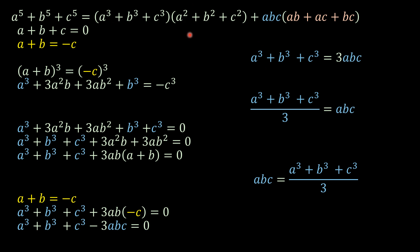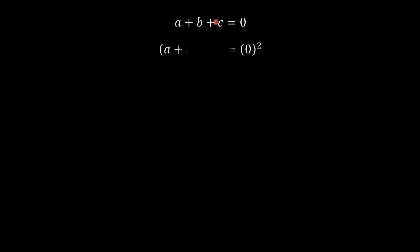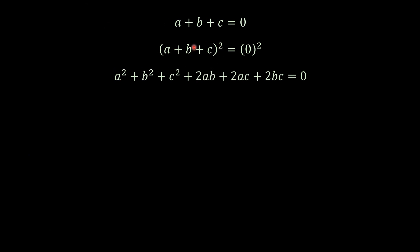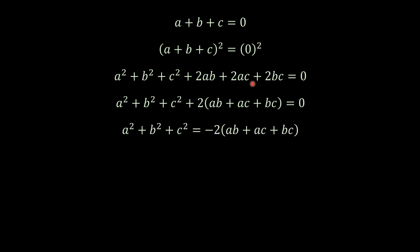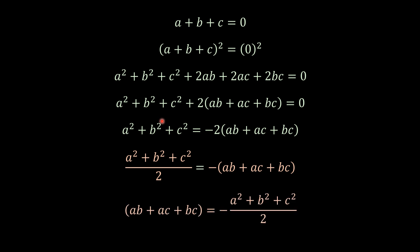Now let's take a plus b plus c equals 0 to the power of 2. Developing here, we're going to have this one is equal to this. Now I'm going to factor out 2 here and then send this to the other side as negative. And then we have this. And then I can write this like this — so we have the other product, ab plus ac plus bc, is this one. This is very interesting.